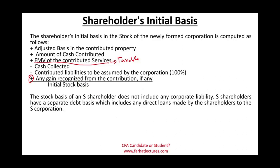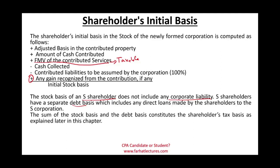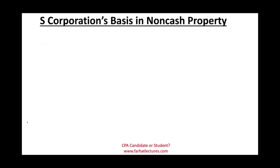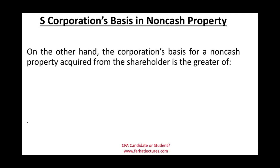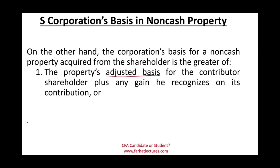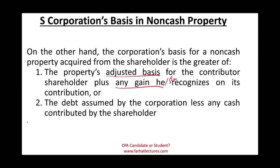Note that the stock basis of an S corporation does not include any corporate liability. S shareholders have a separate debt basis that includes any direct loans made by the shareholder to the S corporation. The sum of the stock basis and the debt basis constitutes the shareholder's total tax basis. On the corporate side, the corporation's basis in non-cash property acquired is the greater of the shareholder's adjusted basis plus any gain recognized, or the liability assumed by the corporation less any cash contributed by the shareholder.